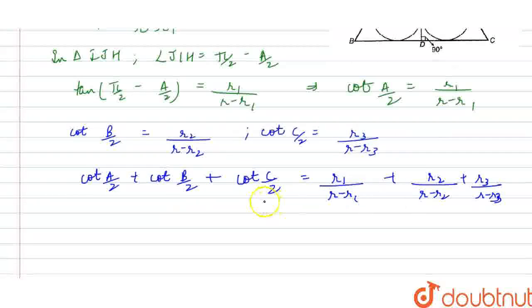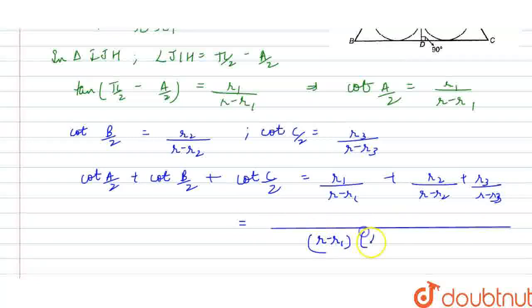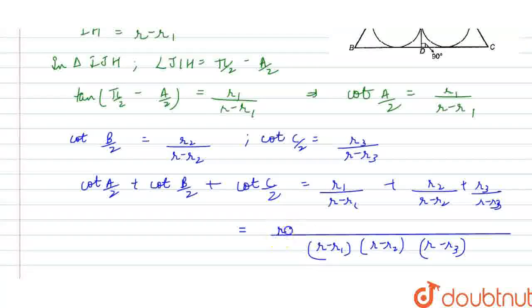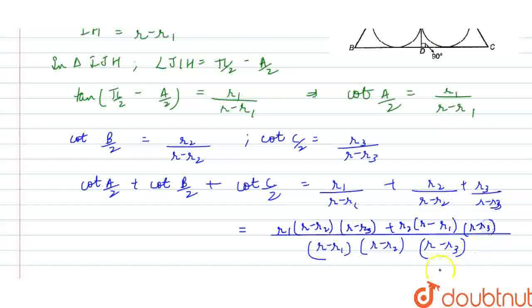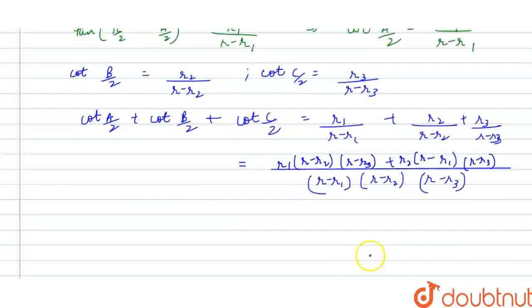Taking LCM, in the denominator I will be getting (R-R1)(R-R2)(R-R3), and here it would be R1(R-R2)(R-R3) + R2(R-R1)(R-R3). Similarly, I am extending the numerator, so it would be plus R3(R-R1)(R-R2).